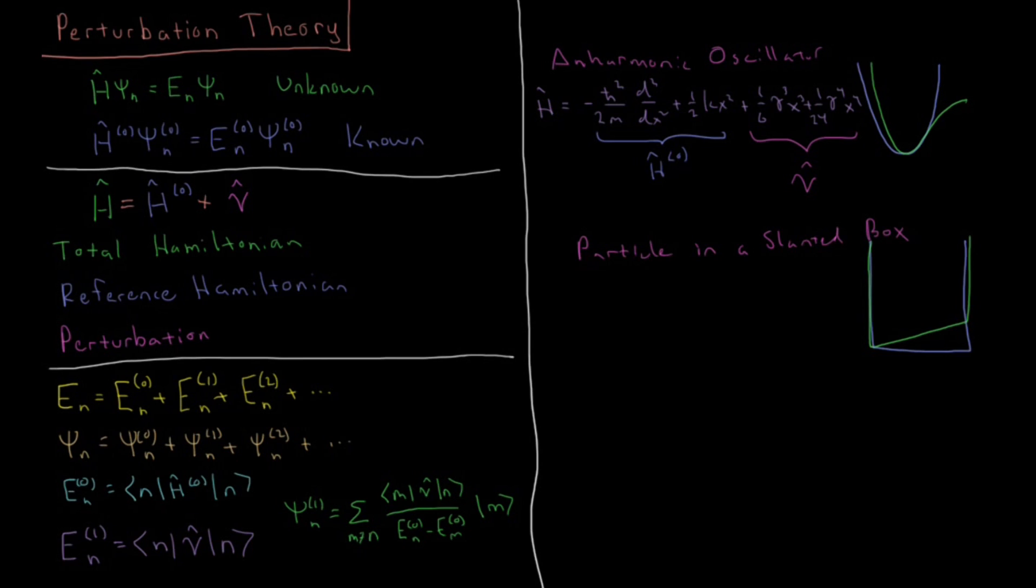For the particle in a slanted box, our Hamiltonian is going to be minus h-bar squared over 2M second derivative with respect to X, the kinetic energy, plus V0 X over L, where V0 is the height of this well on the right side, this deviation away from the particle in a box, which has no potential energy, to the particle in a slanted box, which has a slanted potential energy function within the box.